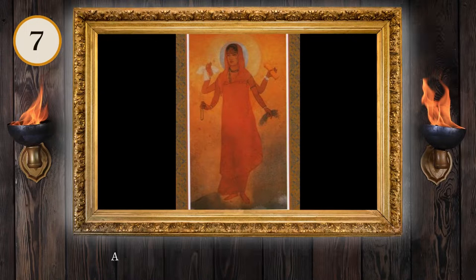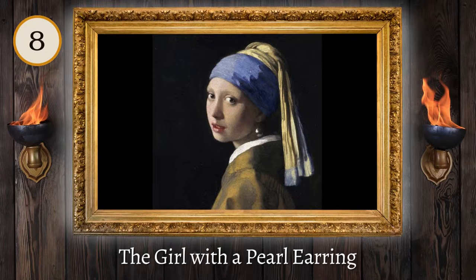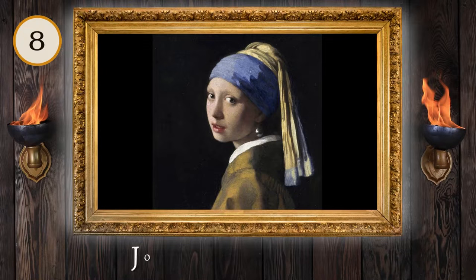Using a Baroque style, who created the Girl with a Pearl Earring in circa 1665? Johannes Vermeer.